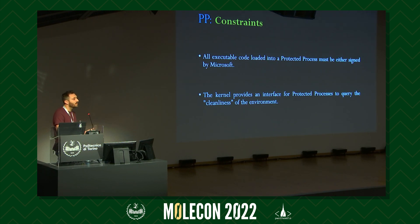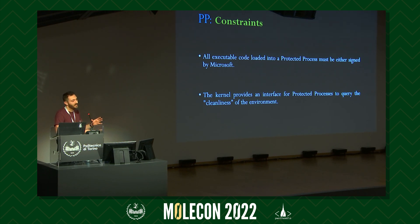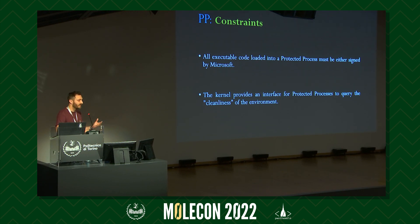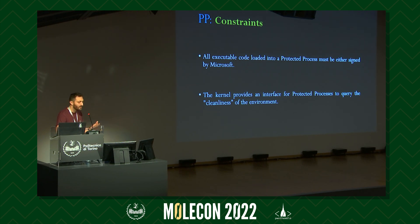All executable code loaded inside a protected process must be signed by Microsoft, or if it's an audio codec, signed with a special DRM certificate obtained from Microsoft. Microsoft maintains control over which processes can be protected. There is also an interface for the kernel to query its own status — the kernel reports back its cleanliness, and protected content is only unlocked if no unsigned code is found running in the kernel. This interface is part of Microsoft's protected environment authorization framework.